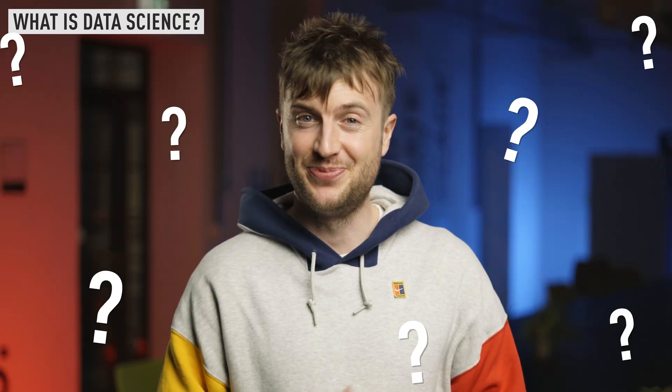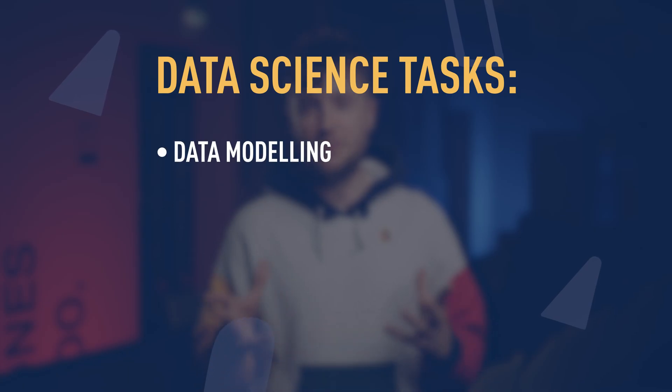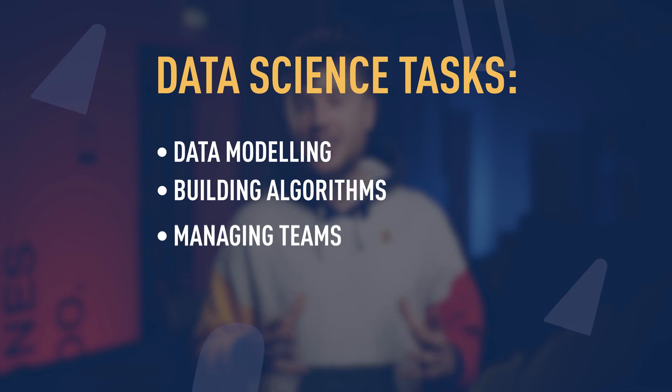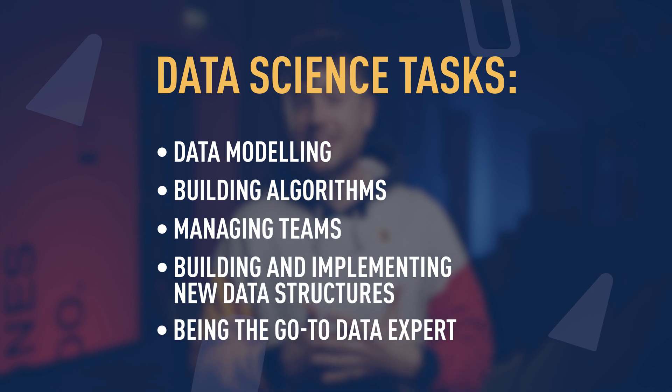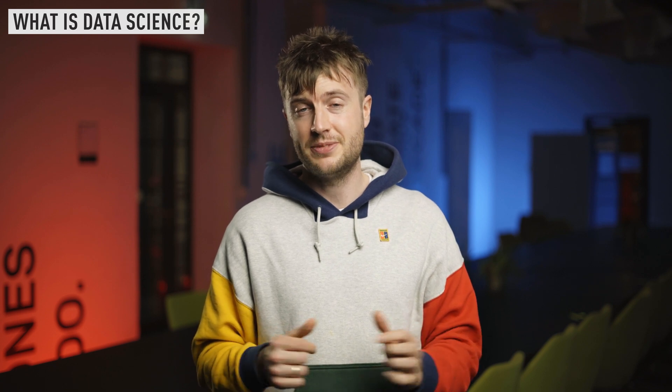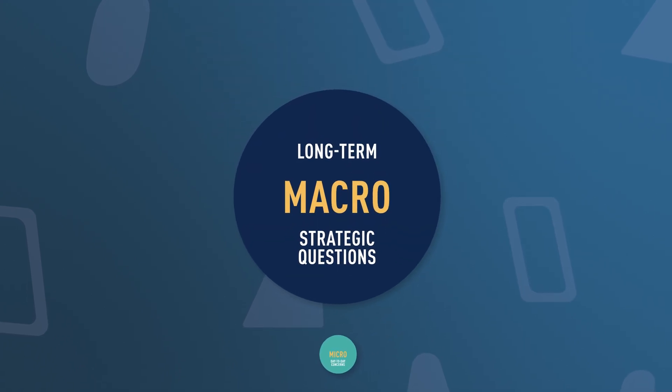If this sounds a bit ambiguous, it's okay. Data science is a highly varied and complex role, and a data scientist's exact responsibilities can vary between different organizations. As a rule, data science involves many complicated and interlinked tasks. It could involve data modeling, building algorithms from scratch, managing large teams and stakeholders, building and implementing new data structures, and generally being the go-to data expert in a given organization. The main takeaway is that a data scientist's focus is less on the micro day-to-day concerns and more on asking long-term, macro strategic questions. For this reason, data science or data scientist is usually quite a senior role.